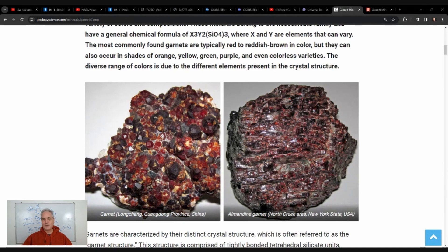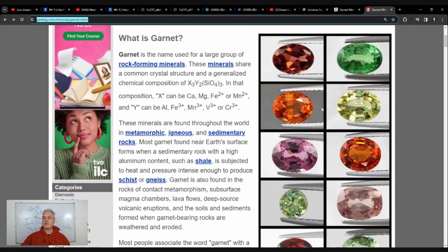Here we have two other examples similar to mine. This one is from China - you can see the shapes of the garnet. Here we have another one from New York State and we can see the garnet parts.